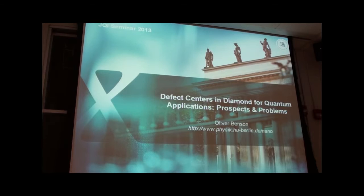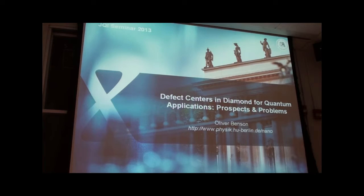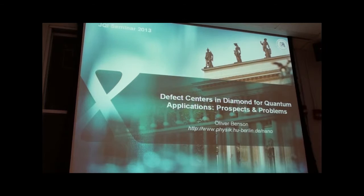Today we have Oliver Benson, a professor from Humboldt University in Berlin. He's going to talk about NV centers in diamond and quantum applications of the NV center. Oliver has an undergraduate degree from LMU Munich, his PhD from LMU and the Max Planck Institute at Garching. Afterwards he came to Stanford University, worked on micro-masers, switched to solid-state physics, spent two years at Stanford, went to University of Constance, and has been a professor at Humboldt since 2001.